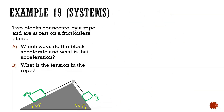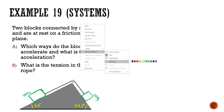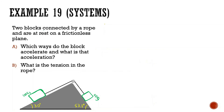Now let's look at the last one — this is the hardest. Two blocks are connected by a rope and are at rest on a frictionless inclined plane. Which way do the blocks accelerate and what is that acceleration? What is the tension in the rope? Let's start by drawing a free-body diagram: force of gravity straight down, force of tension, and normal force for each block.